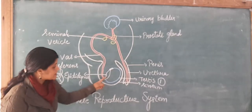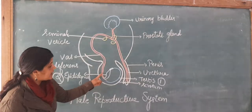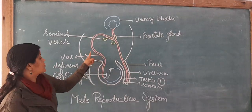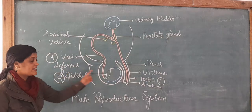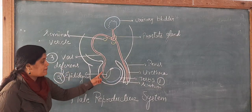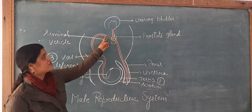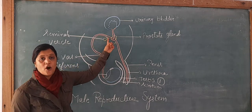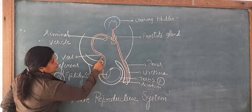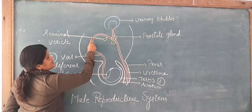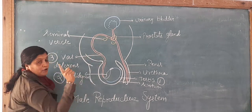From the epididymis, the sperms enter a tube-like structure called the vas deferens. This is the third main part of the male reproductive system. The epididymis opens into this tube-like structure called the vas deferens.